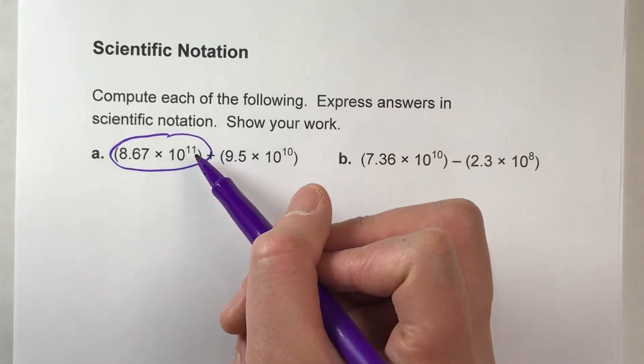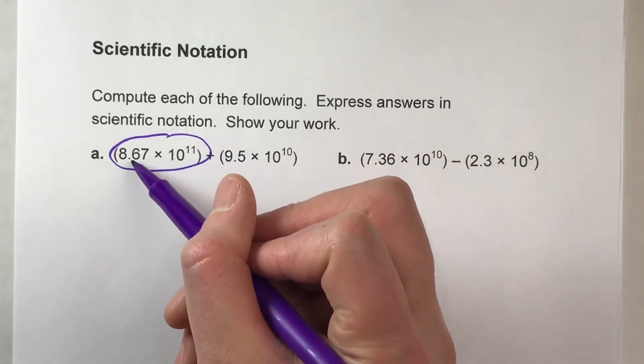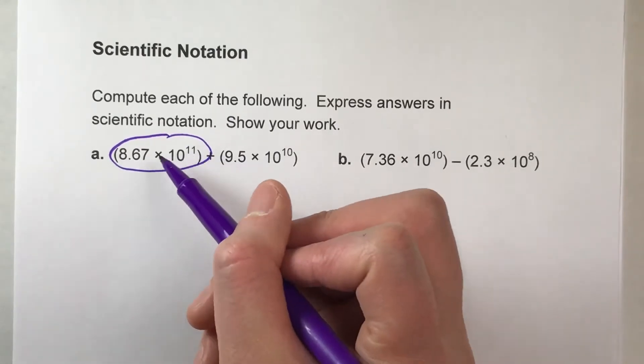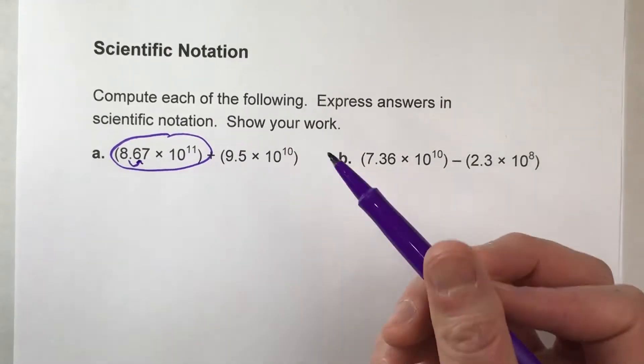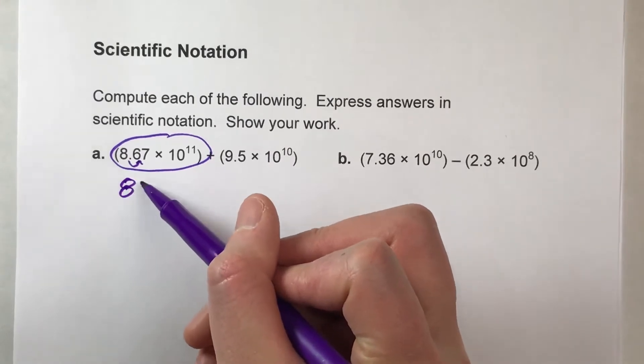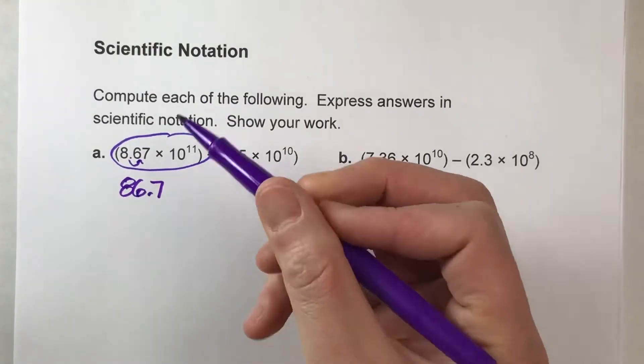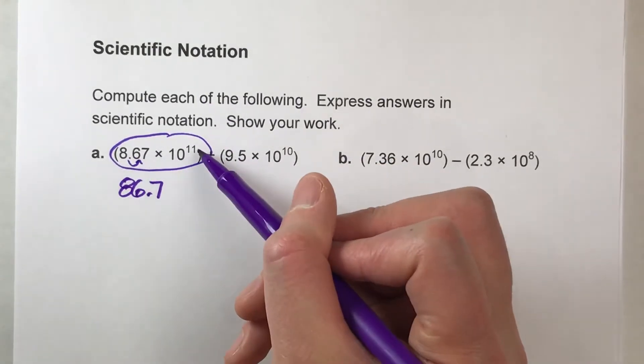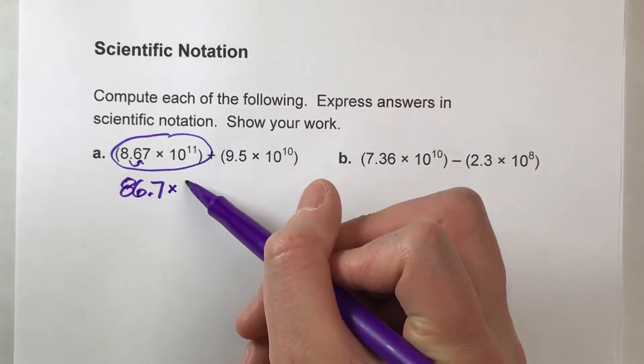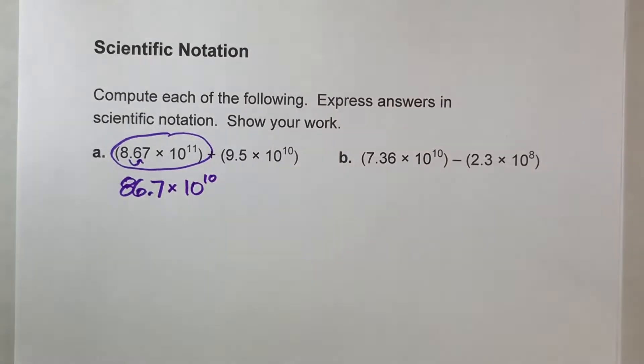And the way I'm going to do that is since I'm supposed to move the decimal 11 places over, I'm actually going to just move it one place over to make it 86.7. So since I've already done one move out of the 11, that means I have 10 left. Does that make sense?